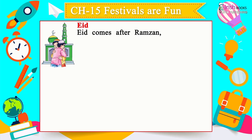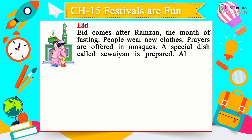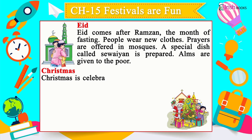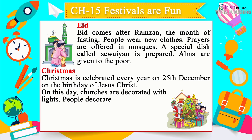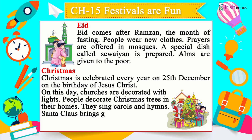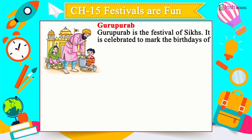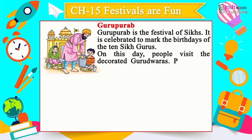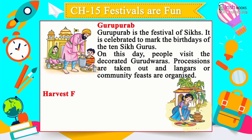Eid comes after Ramzan, the month of fasting — people wear new clothes, prayers are offered in mosques, a special dish called Sivanya is prepared, and alms are given to the poor. Christmas is celebrated on 25th December — churches are decorated, people decorate Christmas trees, sing carols and hymns, and Santa Claus brings gifts for children. Guru Purab is the Sikh festival celebrating the birthdays of the 10 Sikh Gurus — people visit decorated Gurudwaras and langars or community feasts are organised.